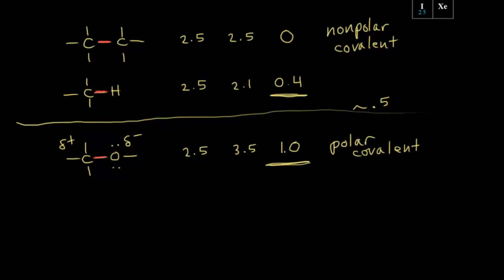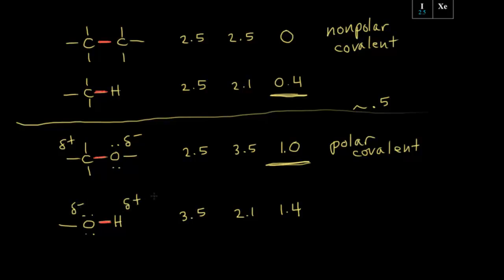Let's compare oxygen to hydrogen. Oxygen has an electronegativity value of 3.5 and hydrogen has 2.1, giving a difference of 1.4 — so this is a polar covalent bond. Since oxygen is more electronegative than hydrogen, the electrons move closer to the oxygen, giving oxygen a partial negative charge and hydrogen a partial positive charge.